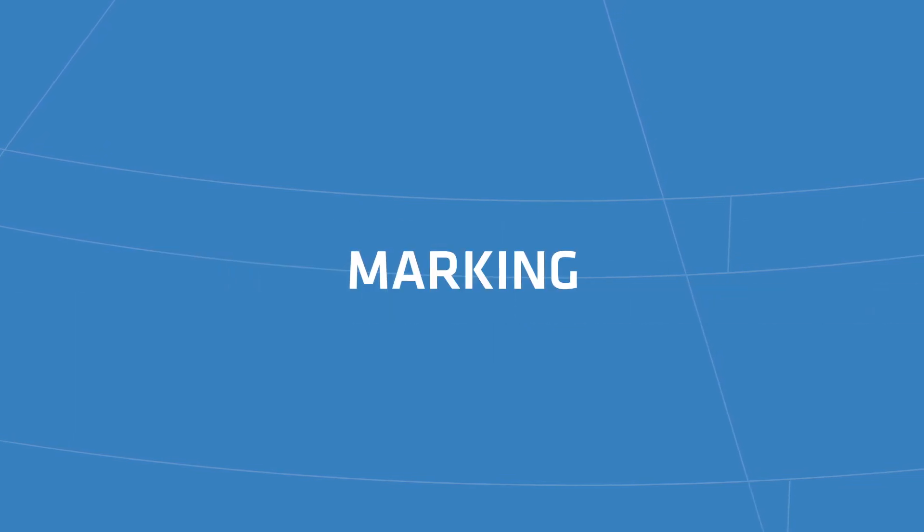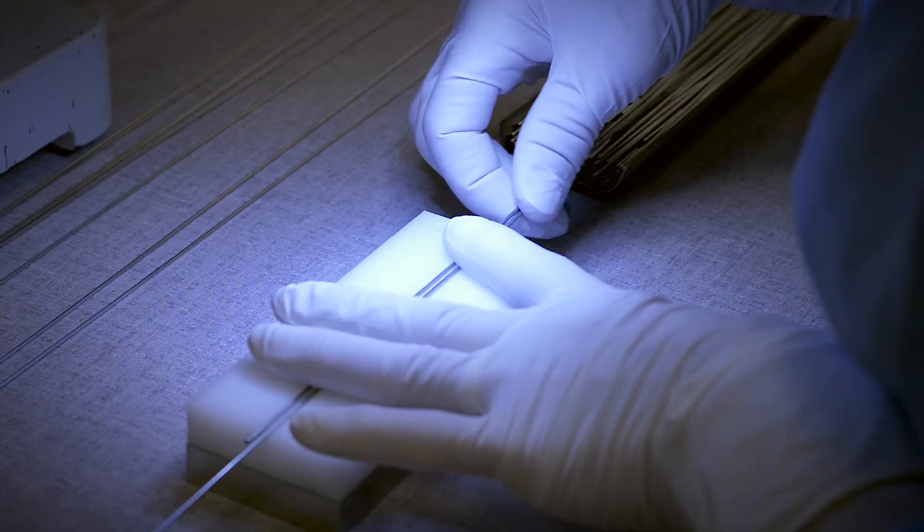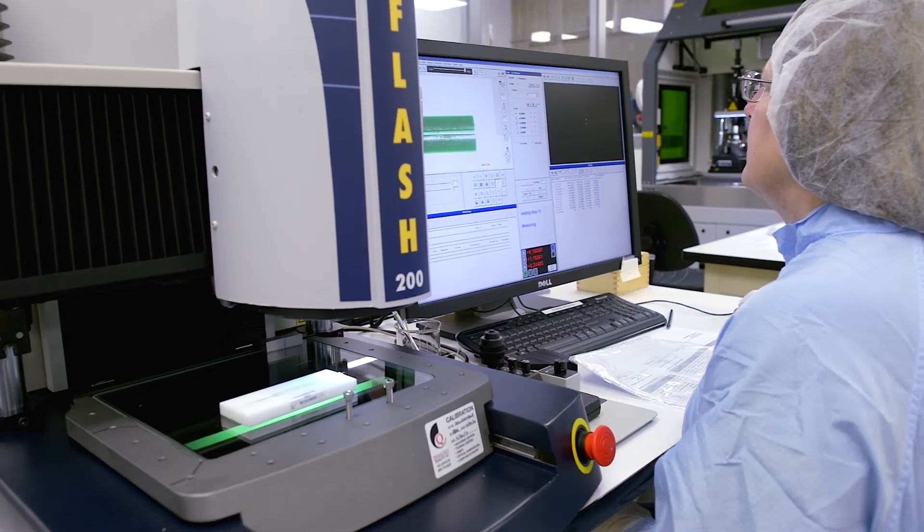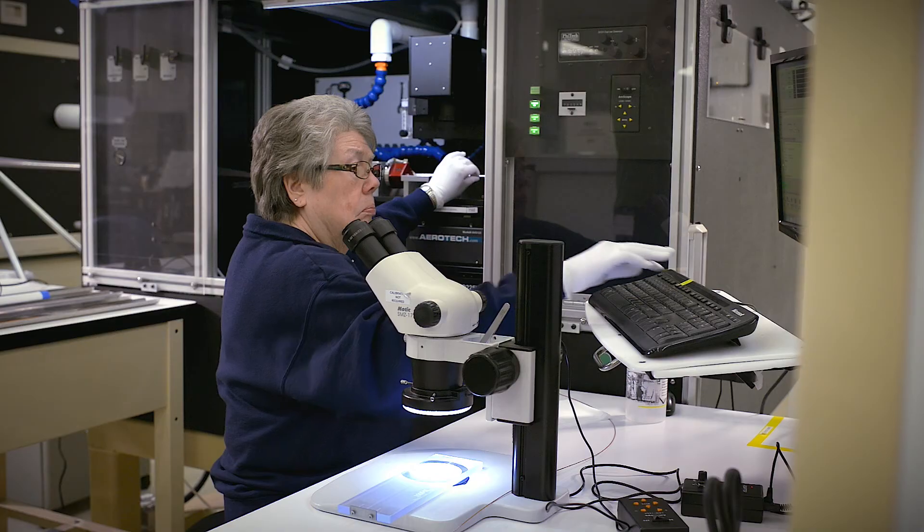Our secondary services are offered in your choice of class 10,000 or 100,000 clean rooms. We do assembly, including lining and heat-shrinking hypo tube, as well as electro polishing and passivating metal components.